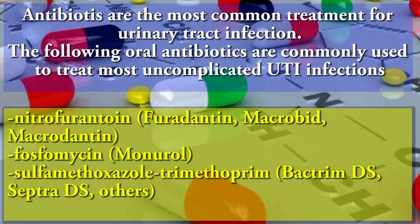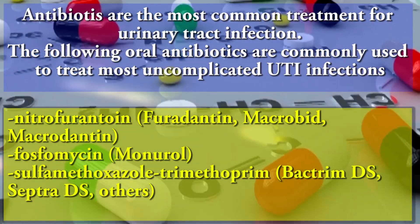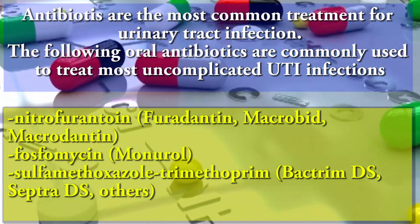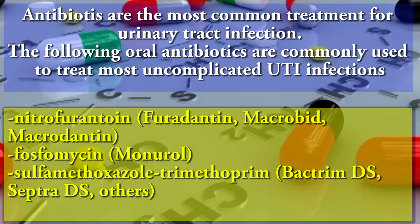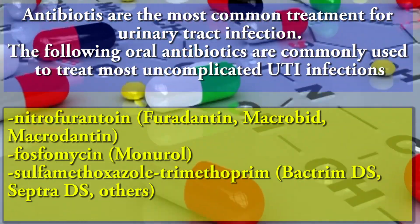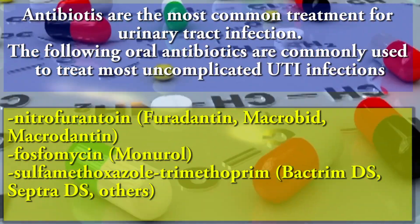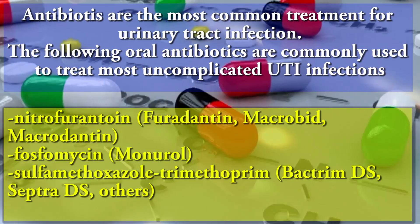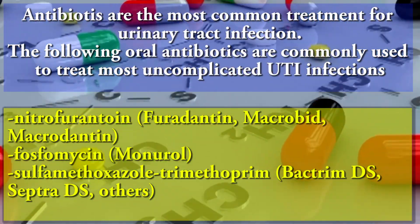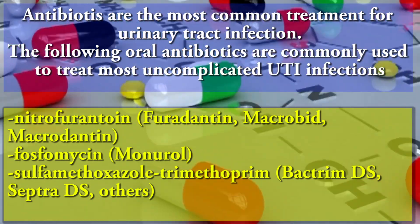What are the treatments for urine tract infection? Antibiotics are the most common treatment for urine tract infection. The following oral antibiotics are commonly used to treat most uncomplicated urine tract infections: Nitrofurantoin, Fosfomycin, Sulfamethoxazole, and Trimethoprim.